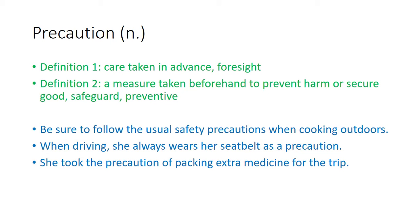Precaution — it's a noun meaning caretaking in advance, foresight. The second meaning of precaution is a measure taken beforehand to prevent harm or secure good; synonyms: safeguard, preventive. Examples: Number one, be sure to follow the usual safety precautions when cooking outdoors. Number two, when driving, she always wears her seatbelt as a precaution. Number three, she took the precaution of packing extra medicine for the trip.